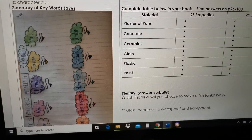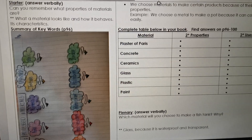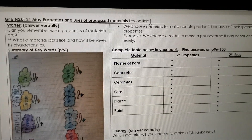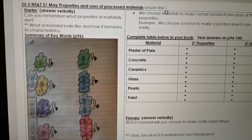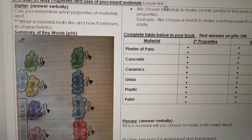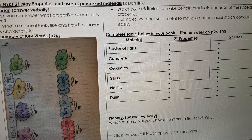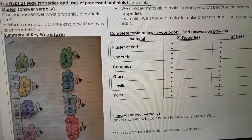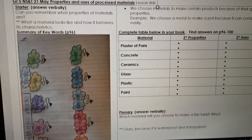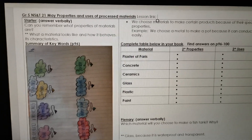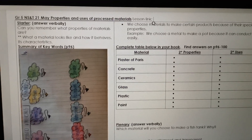Then the plenary: which material will you choose to make a fish tank? Why? Think about what you want to do with a fish tank — what must be the properties of the material you have to pick? I picked glass because it's waterproof and it is transparent, because you want to see the fish inside.